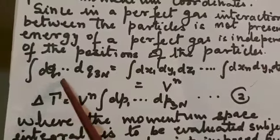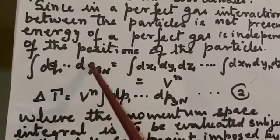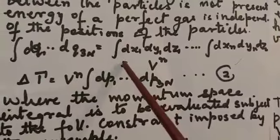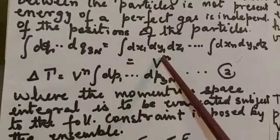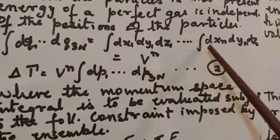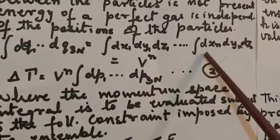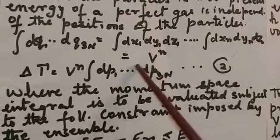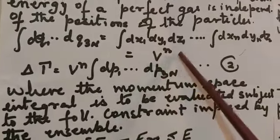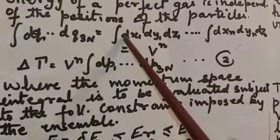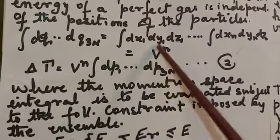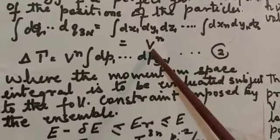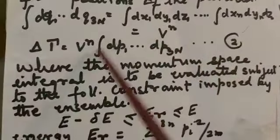So the integral dq1 to dq3N can be taken as integral dx1 dy1 dz1 ... to integral dxN dyN dzN. That is V to the power of N, because one integral dx dy dz is V, and there are N such integrals, giving V to the power of N.